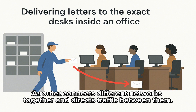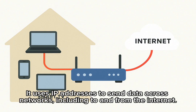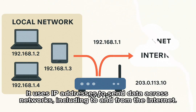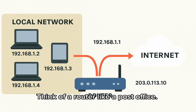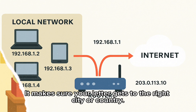A router connects different networks together and directs traffic between them. It uses IP addresses to send data across networks, including to and from the internet. Think of a router like a post office — it makes sure your letter gets to the right city or country.